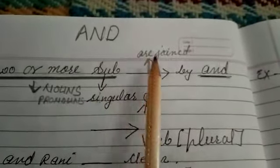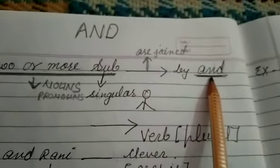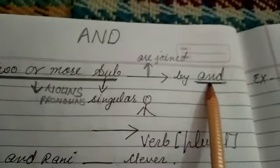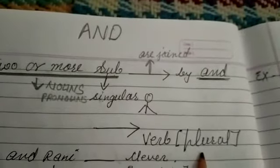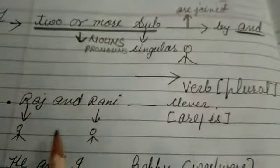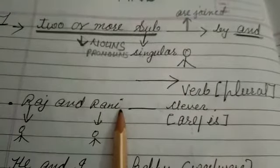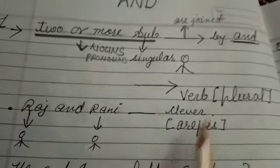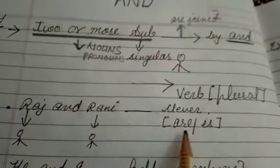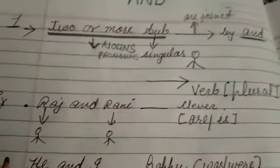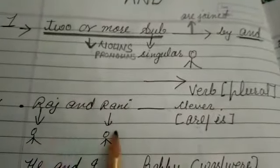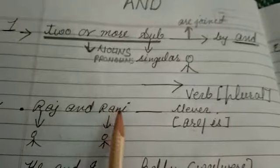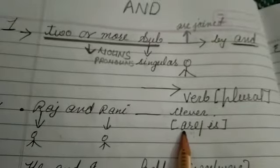Rule 1: If two or more singular subjects are joined by 'and,' we have to apply a plural verb. For example: 'Raj and Rani __ clever.' Because we are talking about two persons — Raj and Rani — the subject is plural, so we apply the plural verb. That is 'are.' Raj and Rani are clever.